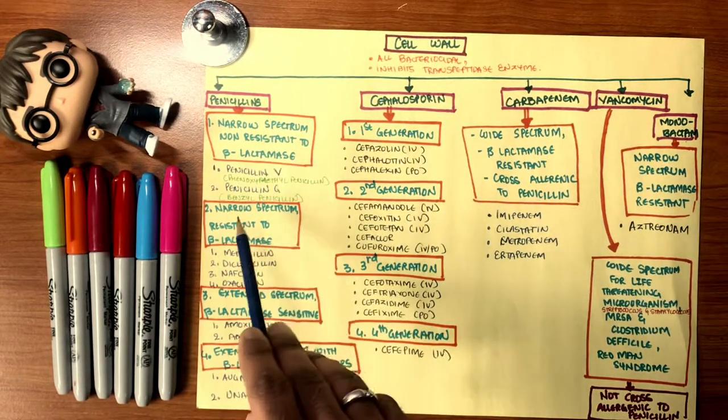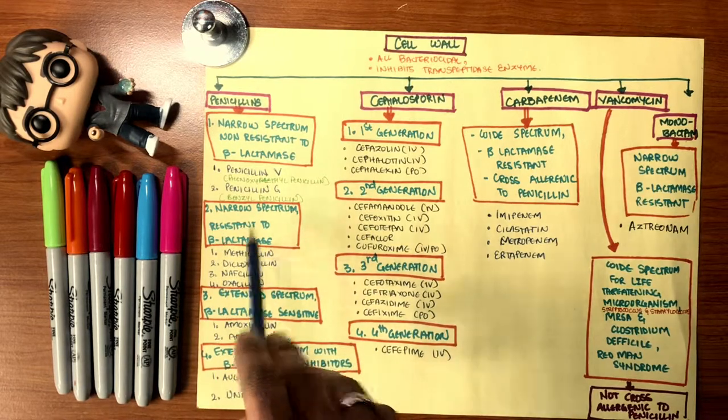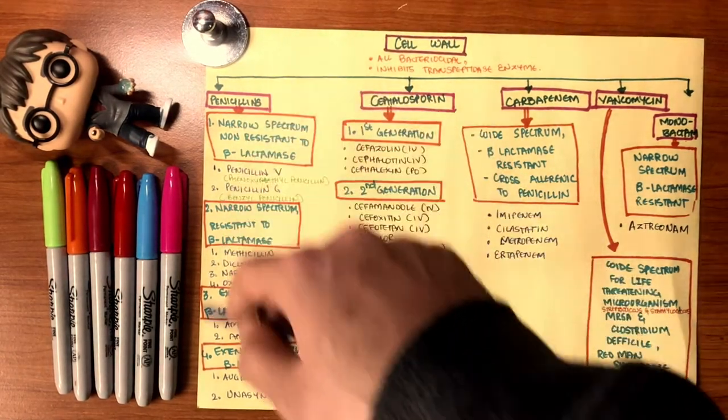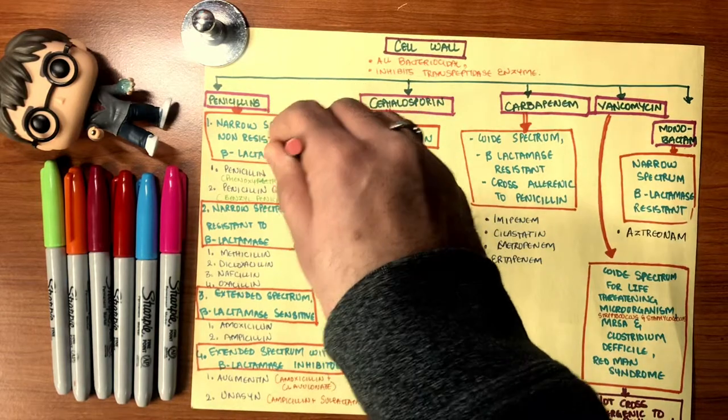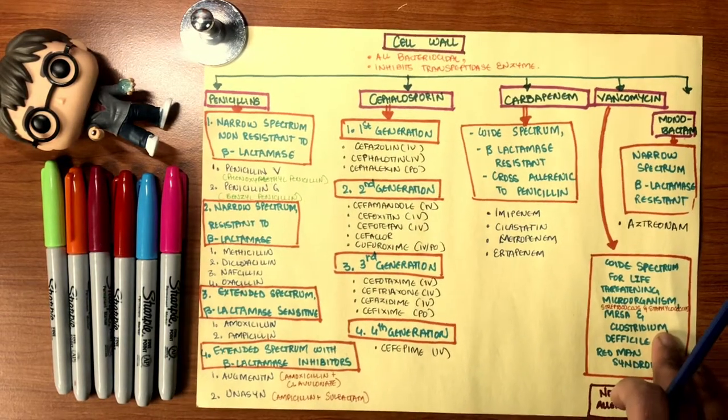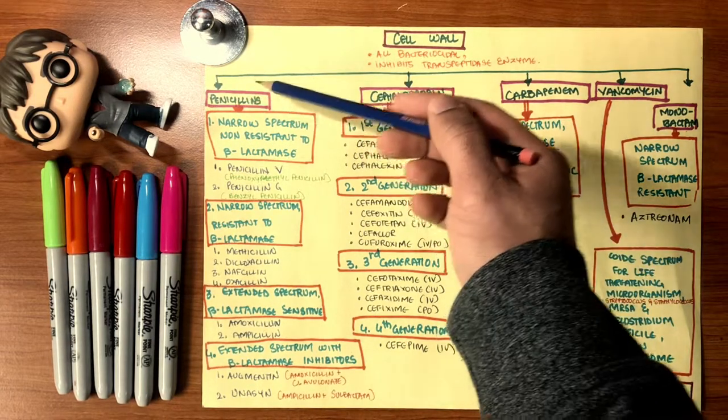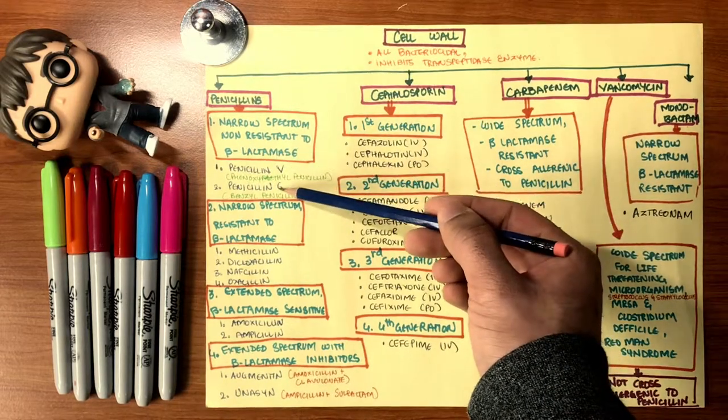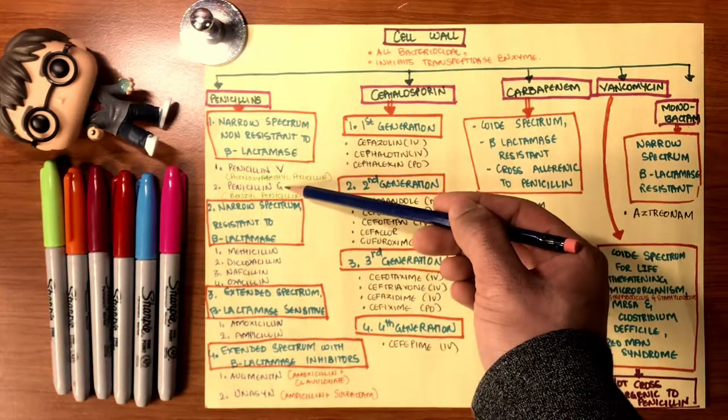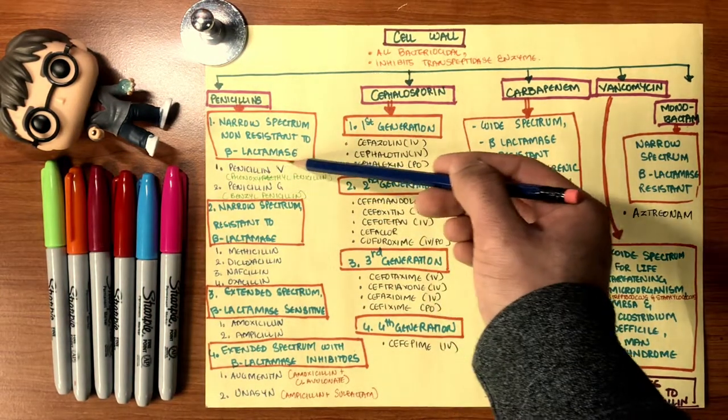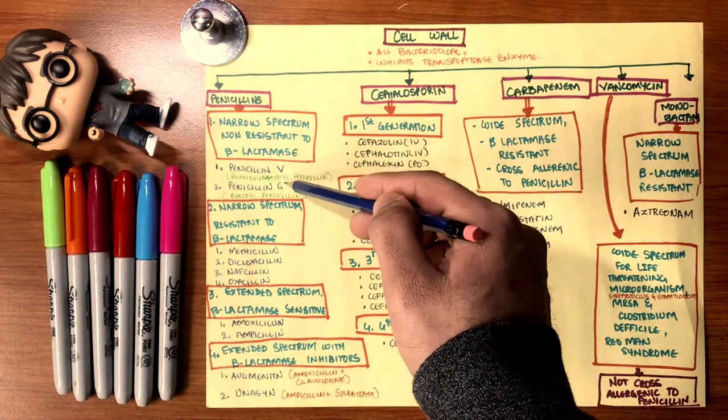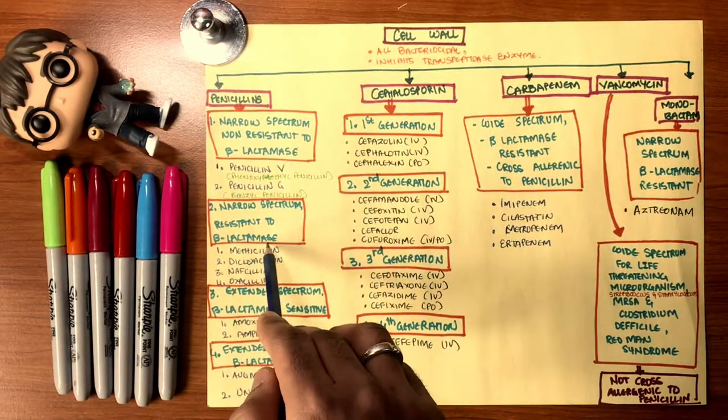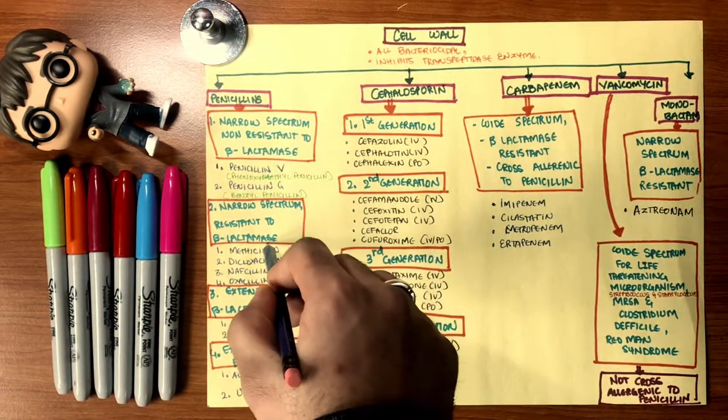Penicillins are further divided into narrow spectrum non-resistant to beta-lactamase, narrow spectrum resistant to beta-lactamase, extended spectrum beta-lactamase sensitive, and extended spectrum with beta-lactamase inhibitors. Beta-lactamase is an enzyme produced by the bacteria that breaks down the beta-lactam structure of the penicillins. These drugs are not resistant to beta-lactamase, such as penicillin V and penicillin G. Penicillin G was the prototype which was not stable in the stomach with the acids, so they created penicillin V. Penicillin G is used as intramuscular, penicillin V is used as oral.